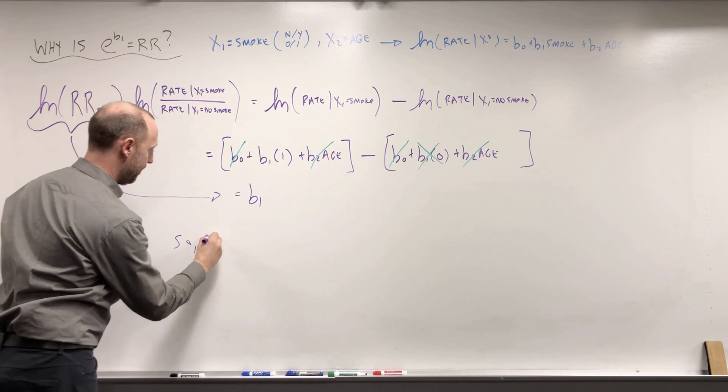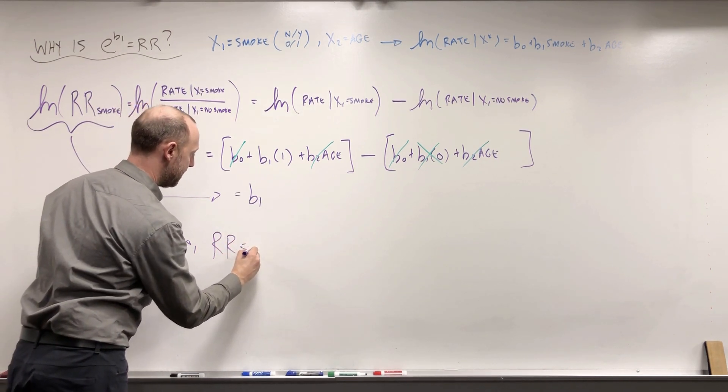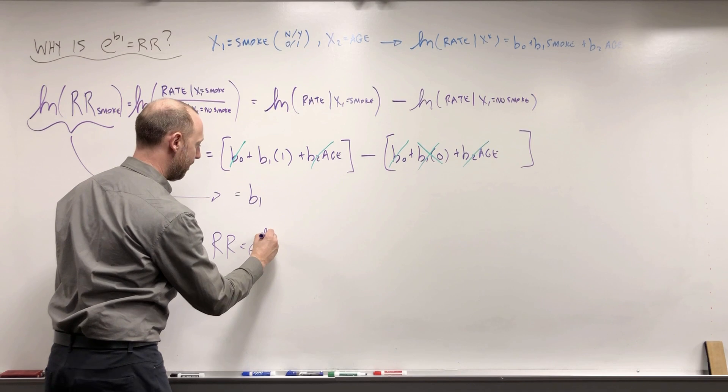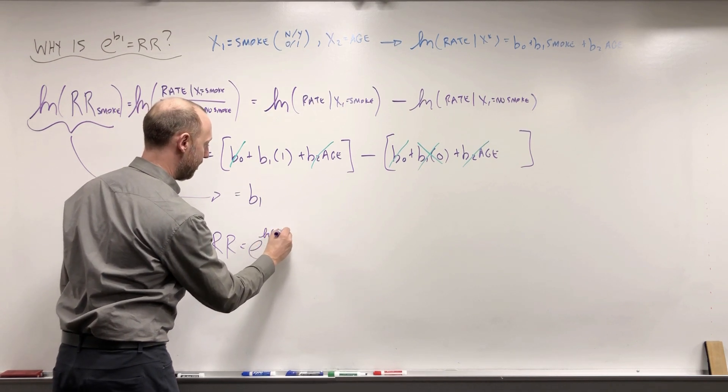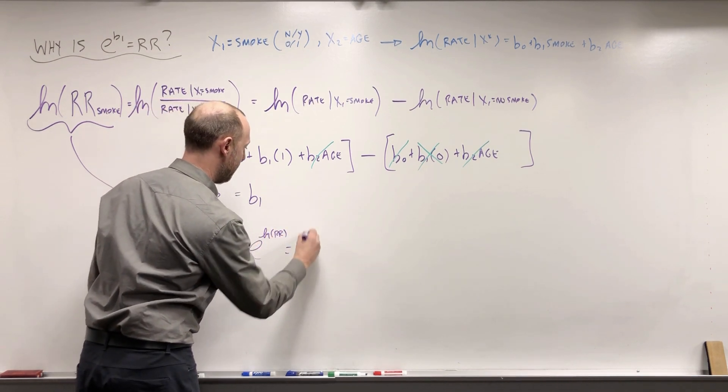So the rate ratio is the exponent of the log rate ratio, or the exponent of b1.